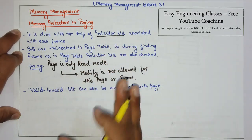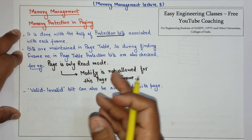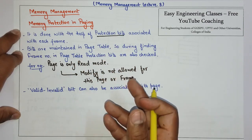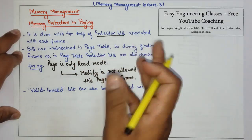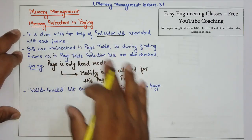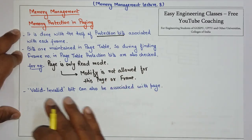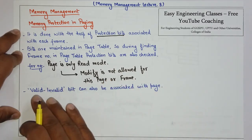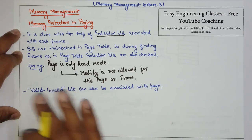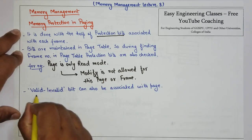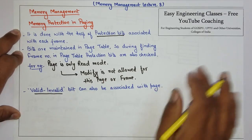Using protection bits we can know which page we can access and which frame we cannot access. There is one more type of protection bit associated with pages, and that is known as the valid-invalid bit.